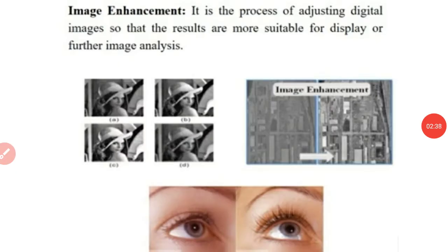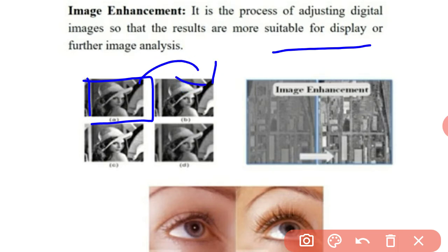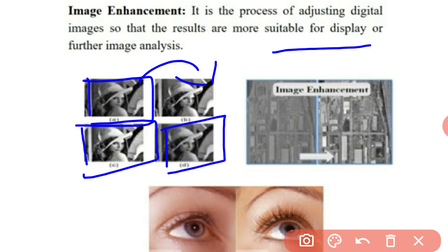Image enhancement is the process of adjusting a digital image so that the results are more suitable for display or further image analysis. For example, using the Lena test image: the input image is enhanced in the first step to reduce noise. If pictorial noise is present, it is removed through enhancement processing. If background information is still displayed, further enhancement steps are applied.